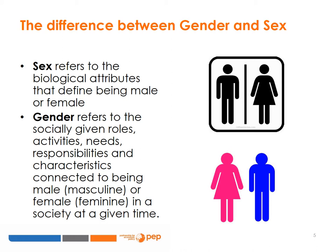Gender refers to socially given roles, activities, needs, responsibilities and characteristics connected to being male or masculine or female or feminine in a society at a given time. To drive home the difference between sex and gender, look at the difference between the two pairs of symbols on the right side of the slide. On the top right hand side, the signs we often see on ladies and gents' restrooms symbolise the biological difference between male and female. The symbols for male and female on the lower right are shown in the colours that society associates with femininity and masculinity.